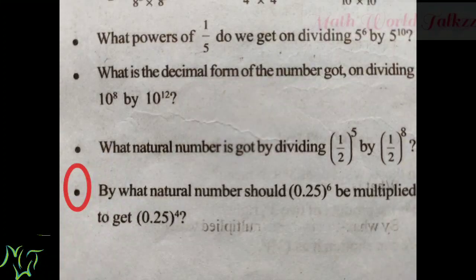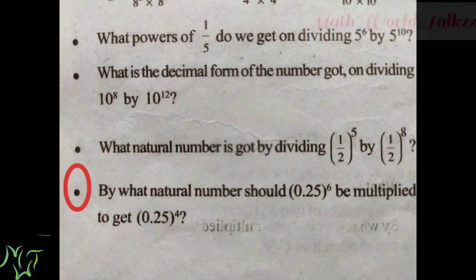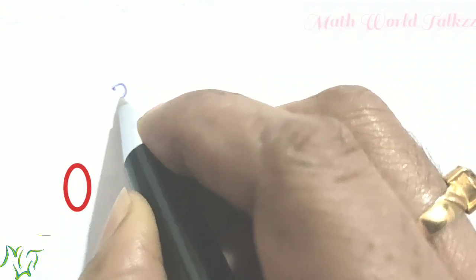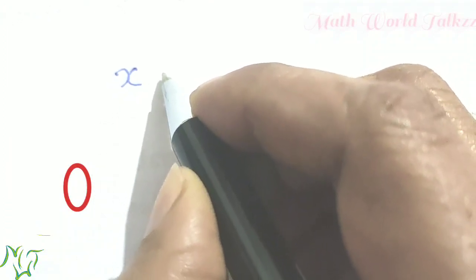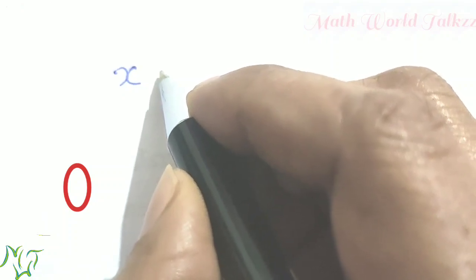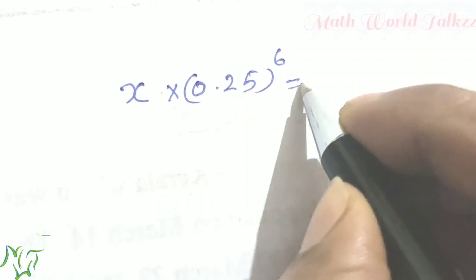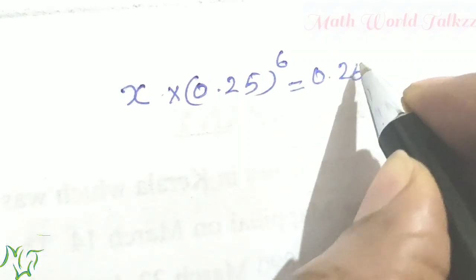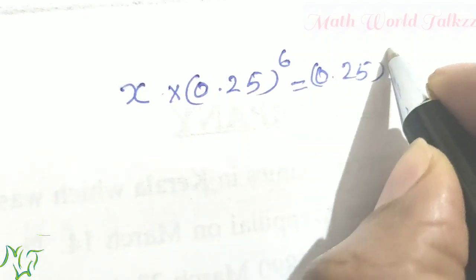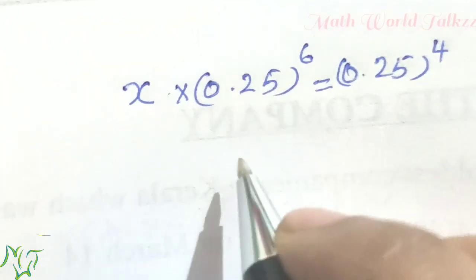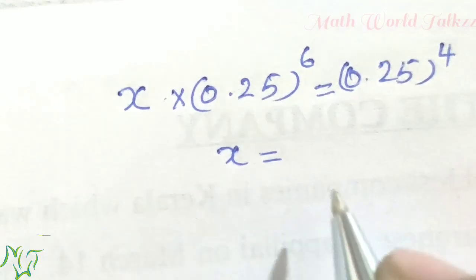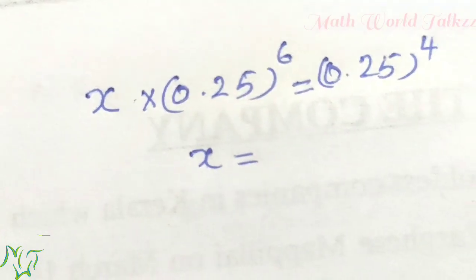Our last question: By what natural number should 0.25 whole raised to 6 be multiplied to get 0.25 whole raised to 4? That means x into 0.25 raised to 6 equals 0.25 raised to 4. We need to find x.